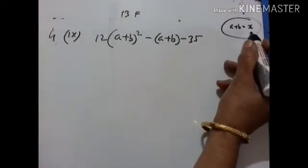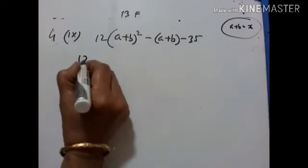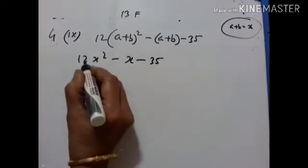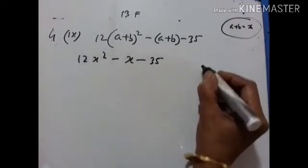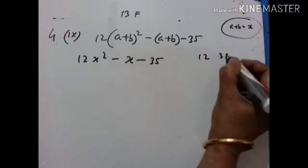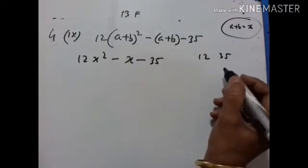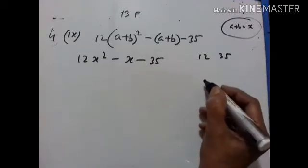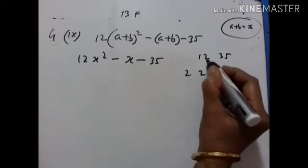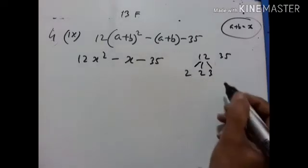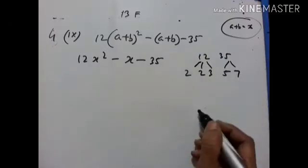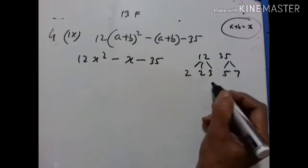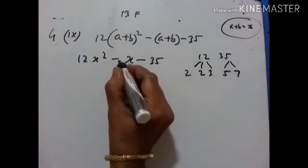Let A plus B equal X. So we have 12X² minus X minus 35. Now 12 into 35 would be a big number, so what you have to do is take the prime factors. Prime factors: 2, 2, 3 — giving 12; and 5 and 7 — giving 35. Now we have to group these numbers such that we get 1.